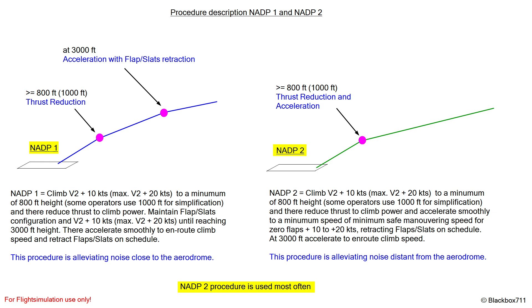When the aircraft passes 3000 feet, it accelerates to the enroute climb speed. This procedure is apparently alleviating noise more distant from the aerodrome.